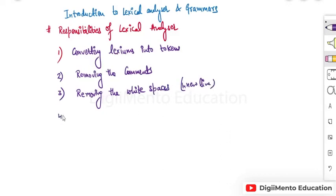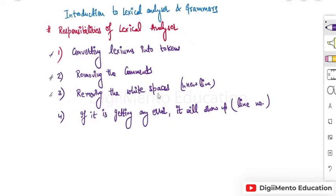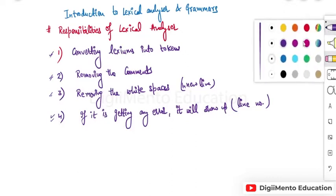The fourth responsibility of the lexical analyzer is: if it is getting any error, it will show the line number in which the error is present. So these are the four responsibilities of the lexical analyzer. Now we will see some questions based on tokens which are generally asked in GATE.